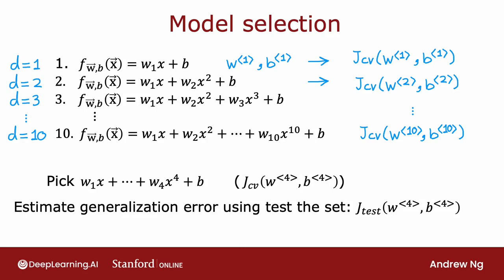Concretely, let's say that JCV of w4, b4 is the lowest. That means you would pick the fourth-order polynomial as the model you will use for this application.